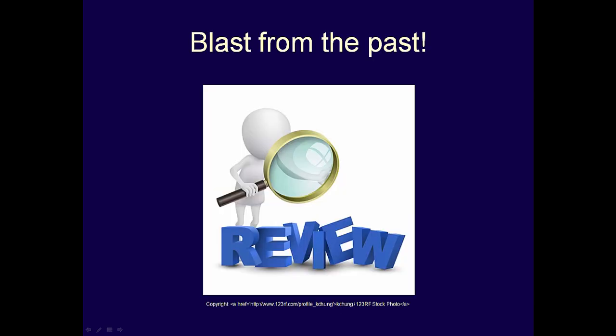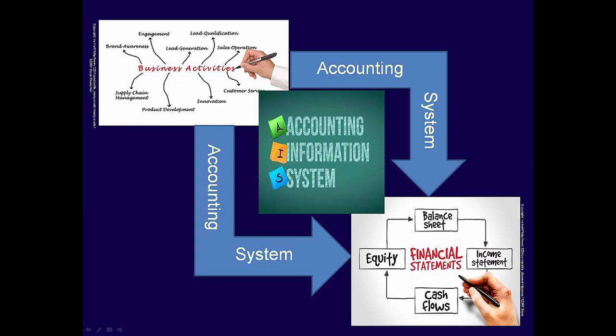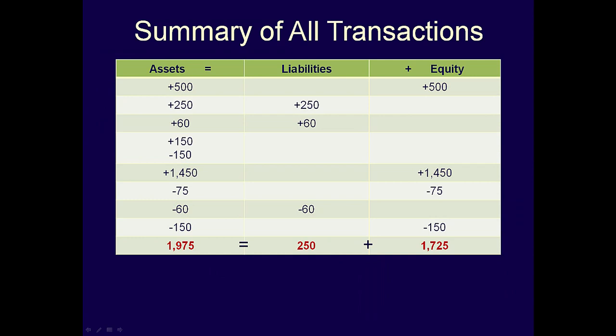Let's have a quick review of what has already been demonstrated. Remember that any accounting system should provide information that is ready for use by decision makers. Stakeholders use accounting information to make resource allocation decisions — basically, what are they going to do with their money? One of the things we did in the previous video is we used the basic accounting equation to record business activities.